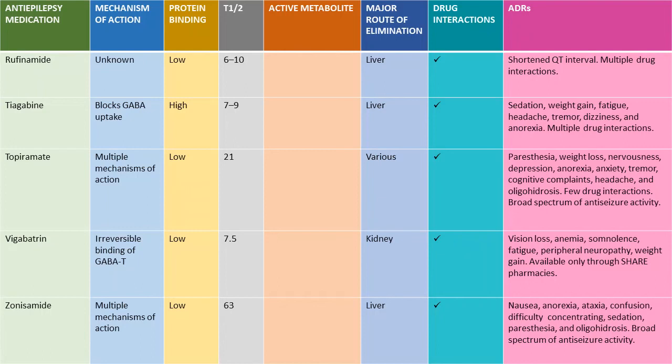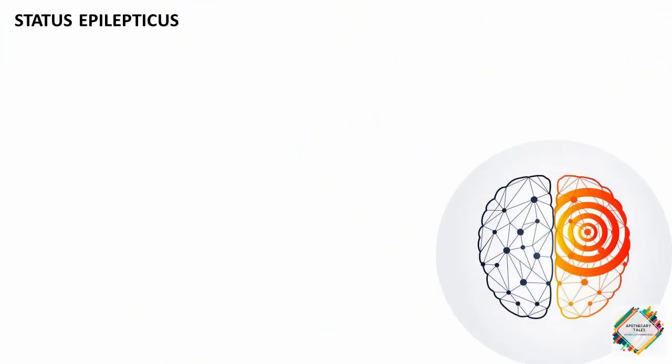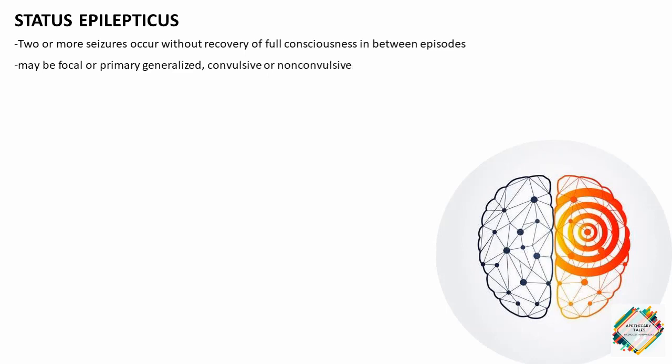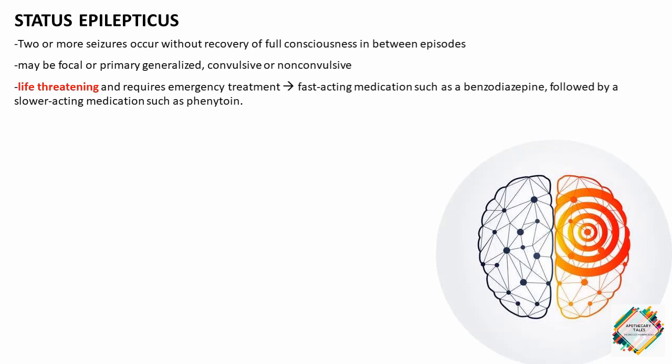Before winding up this topic of epilepsy, I would like to talk about one small topic, that is status epilepticus. Status epilepticus is where two or more seizures may occur without recovery of full consciousness in between the episodes. This may be focal or primary generalized, convulsive or non-convulsive. Status epilepticus is life-threatening and requires emergency treatment, usually consisting of administration of a fast-acting medication such as benzodiazepine, followed by a slower-acting medication such as phenytoin.